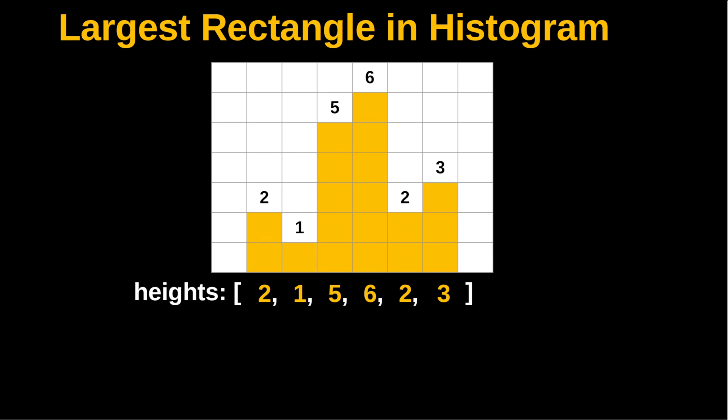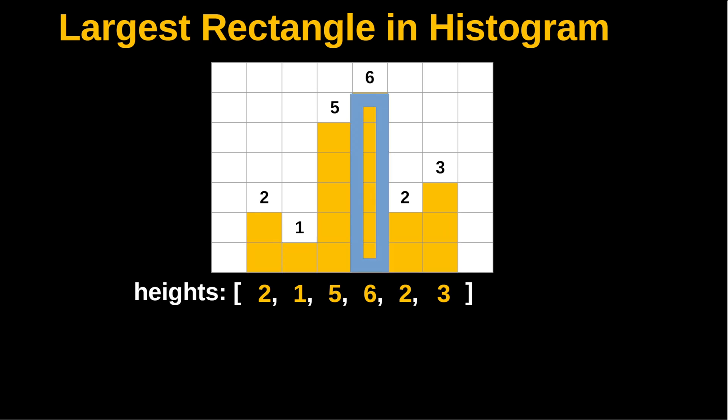Here is another representation of the heights array. The value here represents the height of each bar with a width of 1. There are multiple possible rectangles within the histogram — here would be one, here would be another, and here's a third example. The largest one for this particular histogram has an area of 10 units.